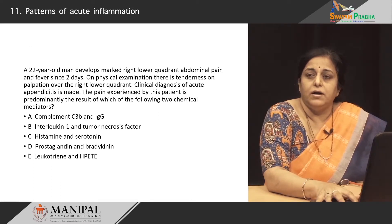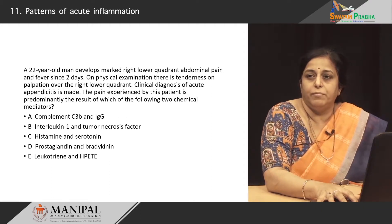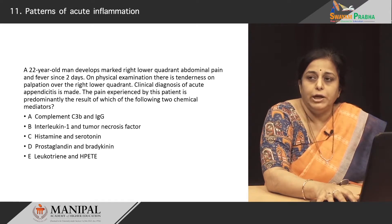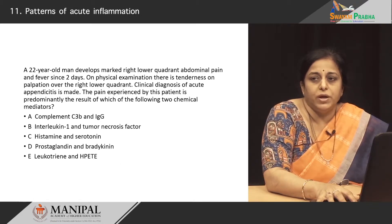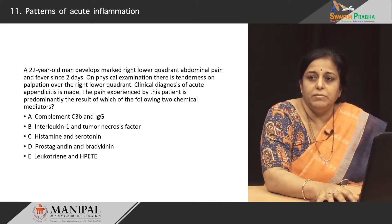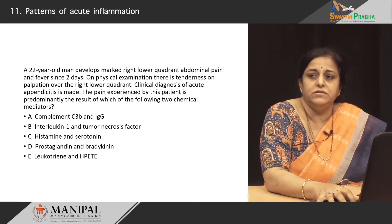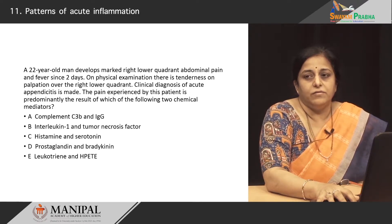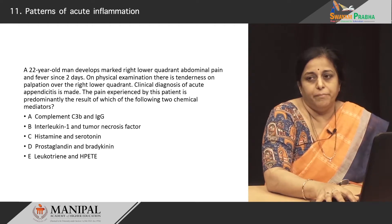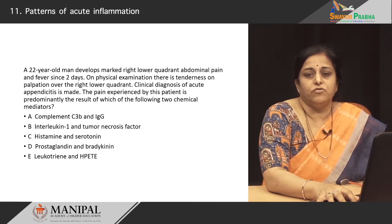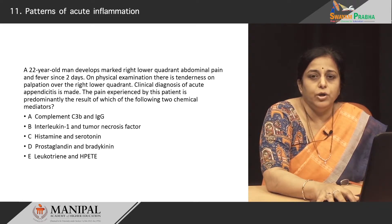Let us try to answer this question. A 22-year-old man develops marked right lower quadrant abdominal pain and fever for 2 days. On physical examination there is tenderness on palpation over the right lower quadrant. A clinical diagnosis of acute appendicitis is suggested. The pain experienced is a result of which two chemicals? The options are: complement C3b and IgG; interleukins and TNF; histamine and serotonin; or prostaglandins and bradykinin. The correct answer is prostaglandins and bradykinin — the pain in inflammation is caused by prostaglandins and bradykinin. If you are asked what is responsible for fever, it would be interleukins and tumor necrosis factor.